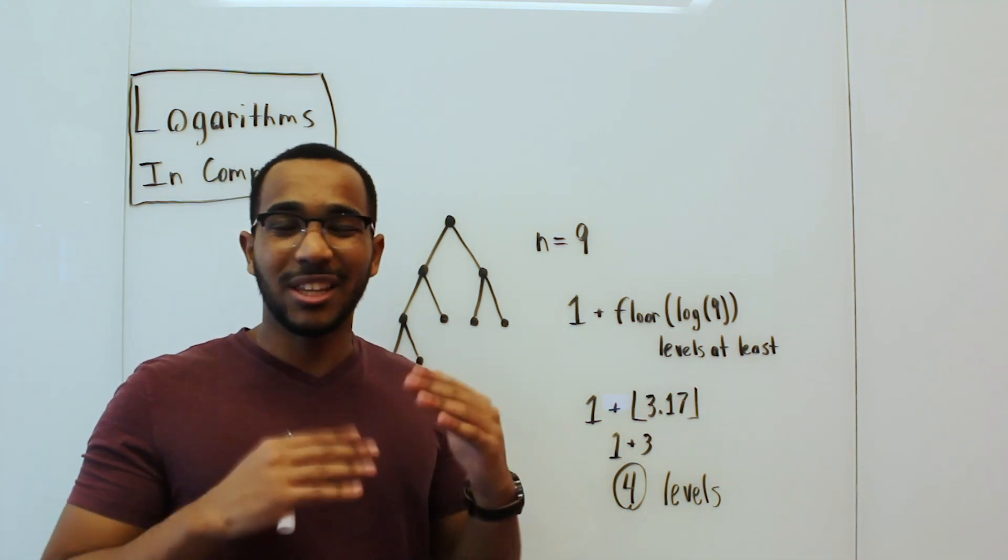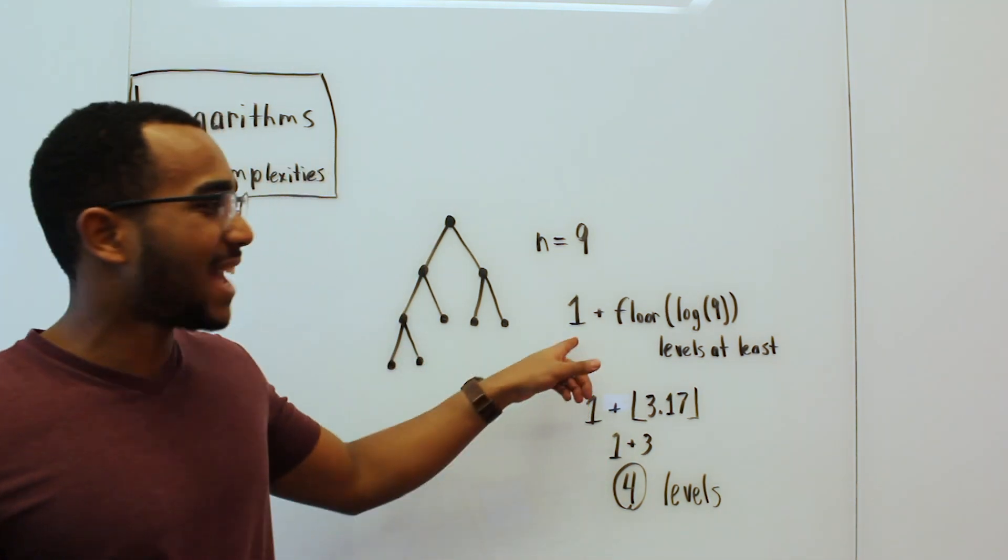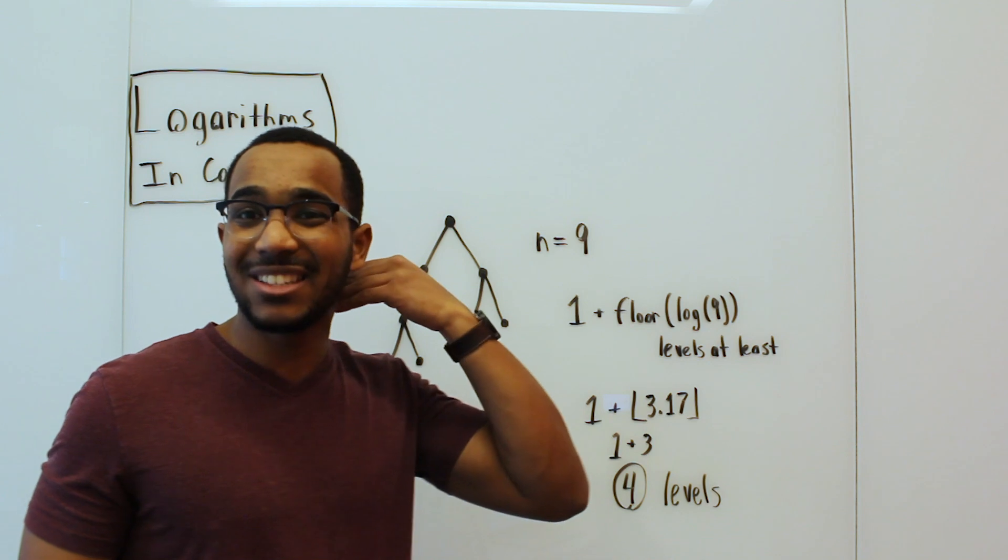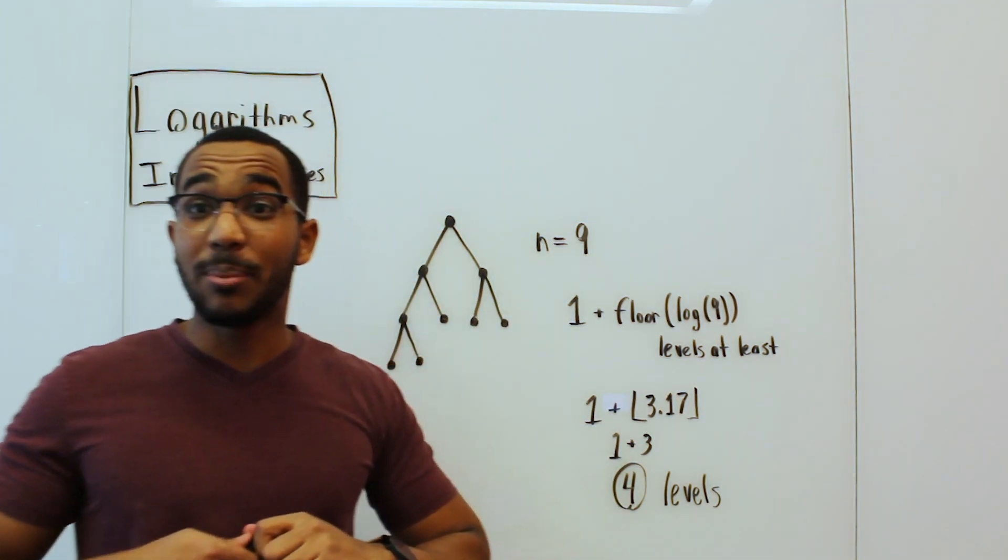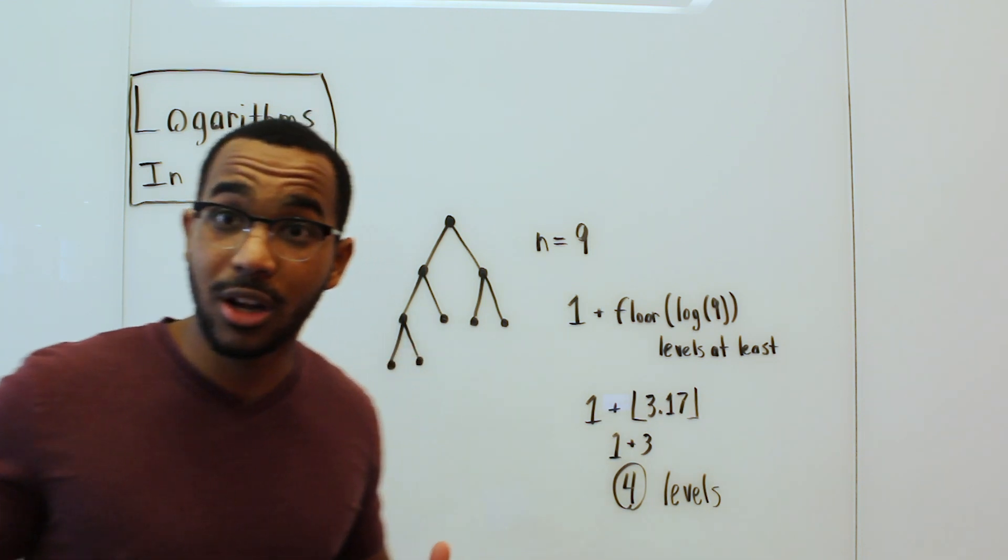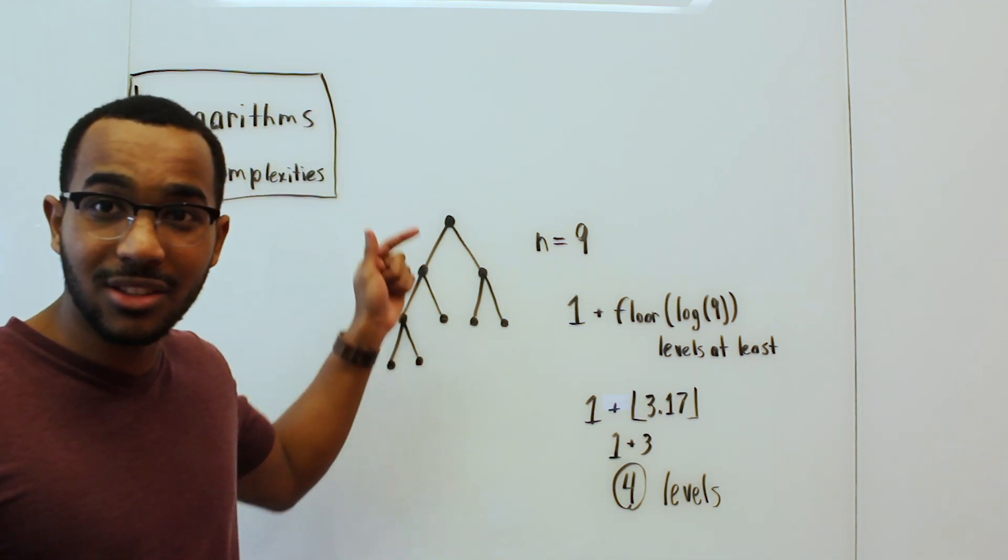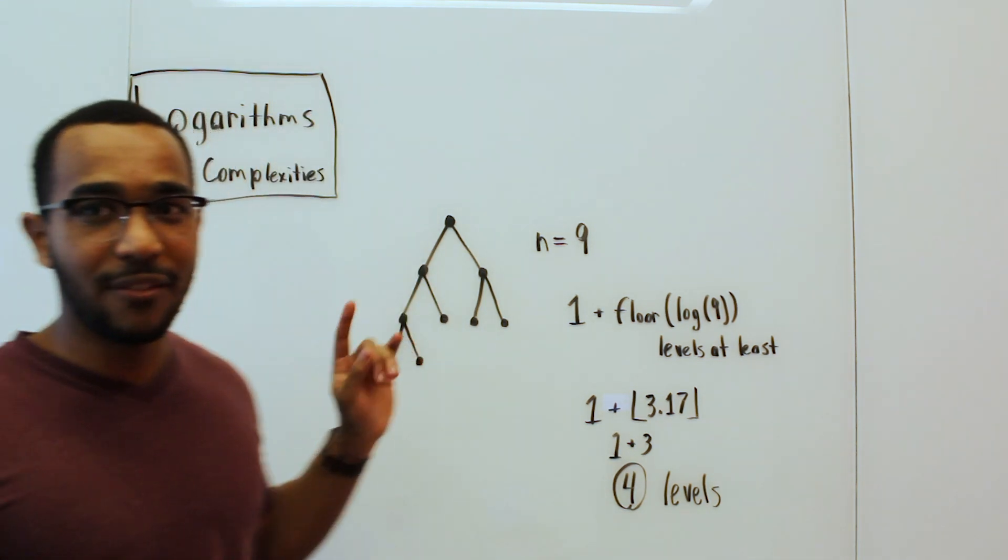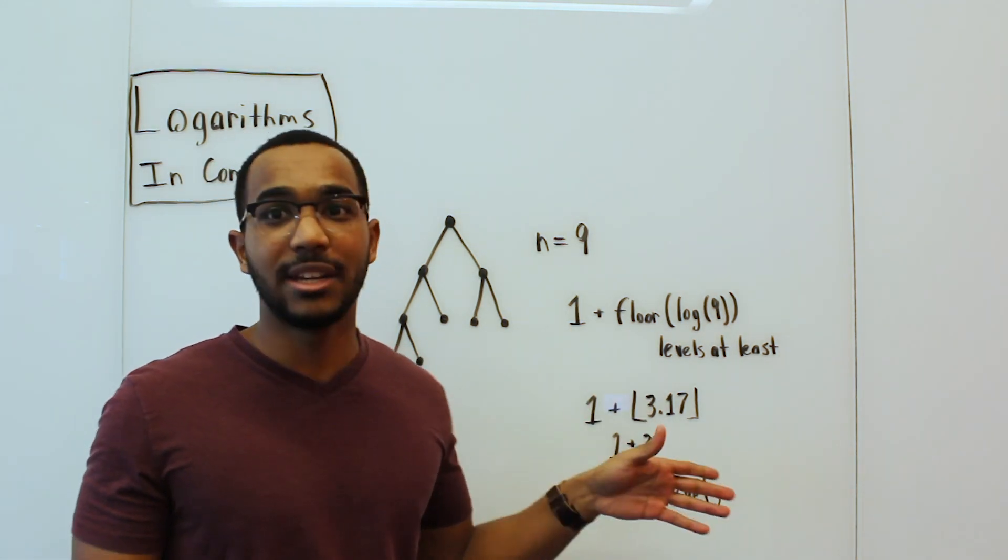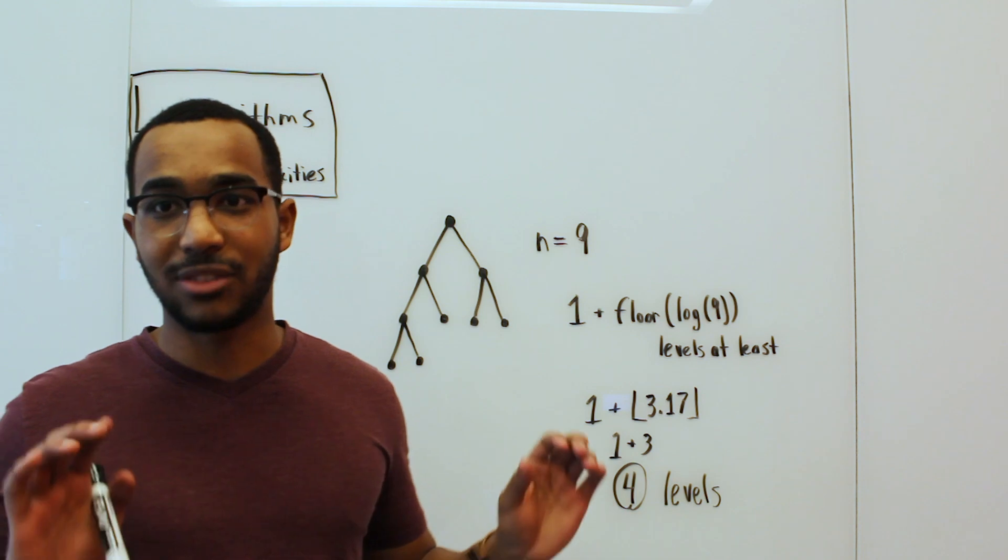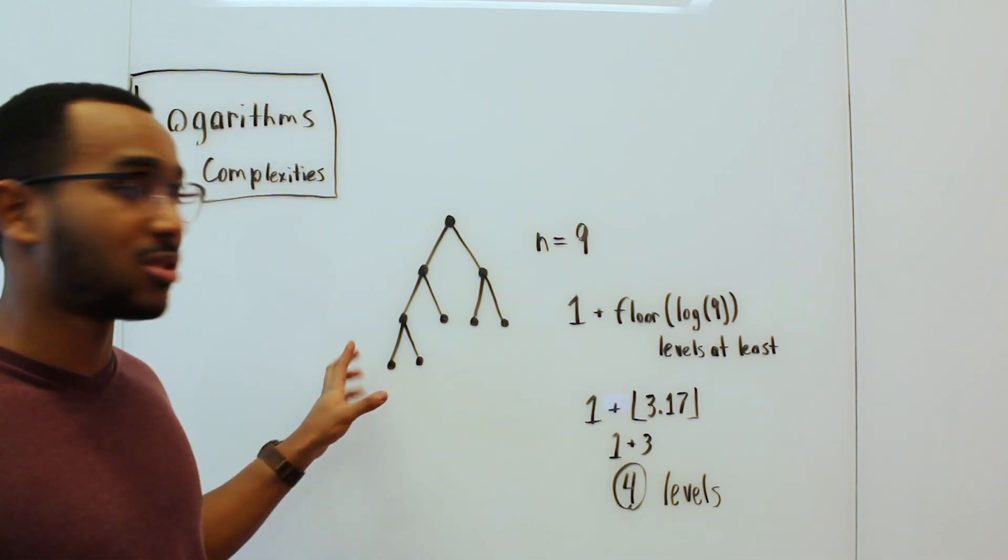We have approximately log n levels. If we took the asymptotic complexity or the asymptotic behavior of a traversal of the height, we're going to be performing logarithmic work when we are traversing the height of a binary structure like this. If it is balanced, at least. If it is skewed to the right, then we're going to be doing linear time work, but that's for another day.